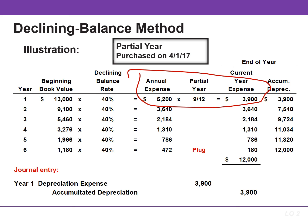The depreciation expense is $3,640 in the second year, found by taking the book value of $9,100 and multiplying by 40%. In the last year, depreciation expense is $180, because that is the amount needed to arrive at total depreciation of $12,000.